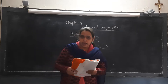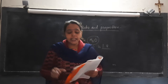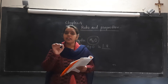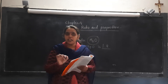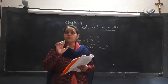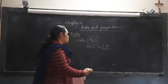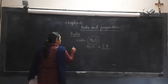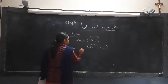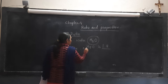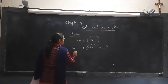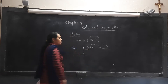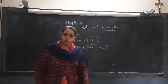For example, when making Idli, if we take 3 balls of rice and 1 ball of pulse, then the ratio of rice to pulse is 3 is to 1. So in this way, this is called ratio.